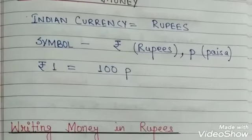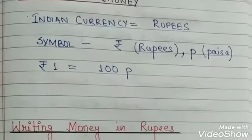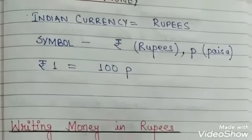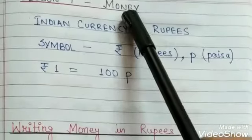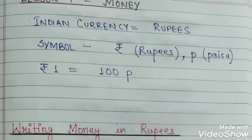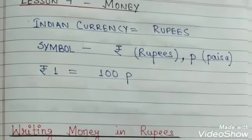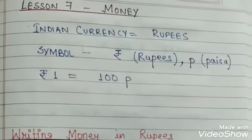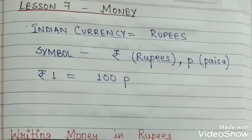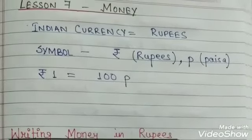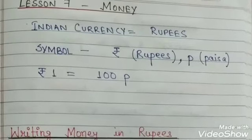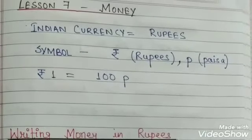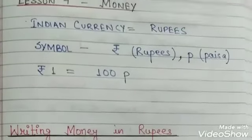Good morning students, welcome to online classes. Today we will study Lesson 7: Money. For our daily needs, we have to buy various things from the market. For buying things, we have to pay money to the shopkeepers. For example, when you buy chocolates, biscuits, or eatables from the shop, you have to pay some amount to the shopkeeper.